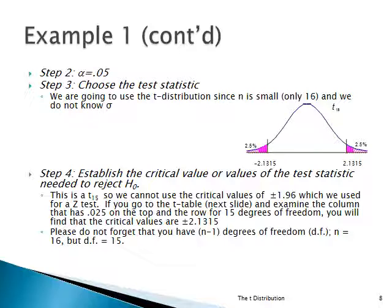So you're going to go to the table and look for 0.025 — that's going to be the column. And you're going to look for 15 degrees of freedom — 16 minus 1 is 15. You'll find the critical values are 2.1315 on the right and minus 2.1315 on the left. T15, as mentioned, is not the same as T16 or T17, but for T15 your critical values are ±2.1315.